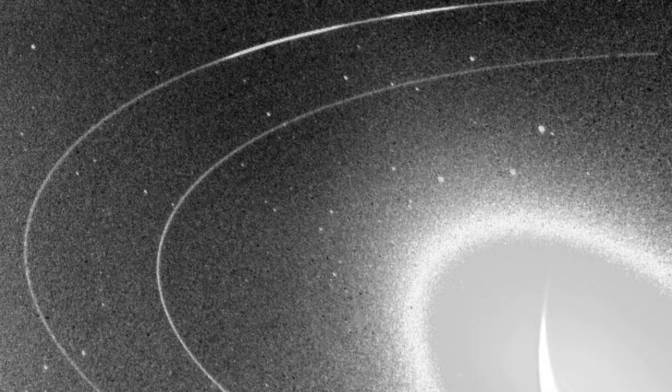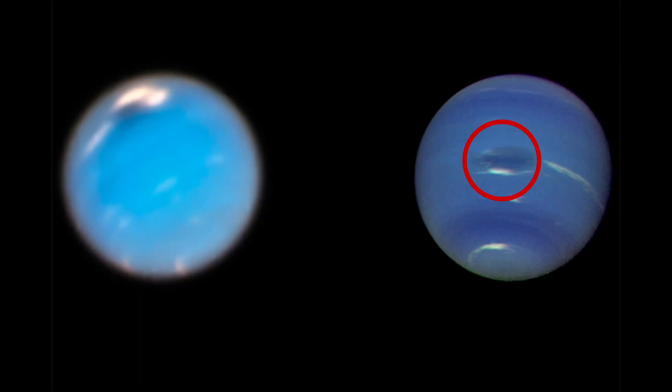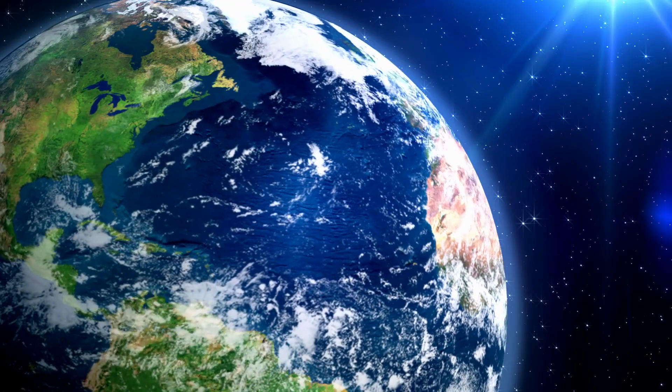When Voyager captured the planet in visible light, it saw a magnificent blue ball striped with white clouds in a black storm the size of the entire Earth.